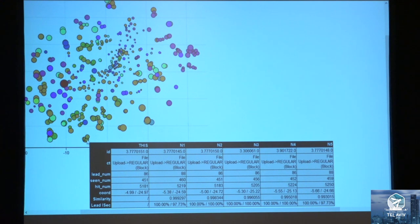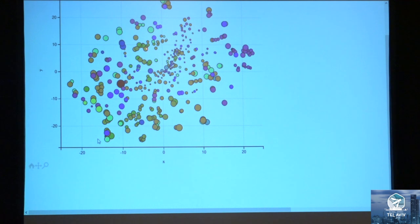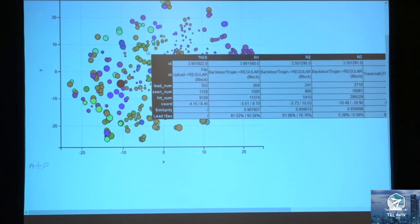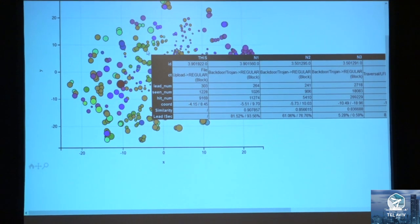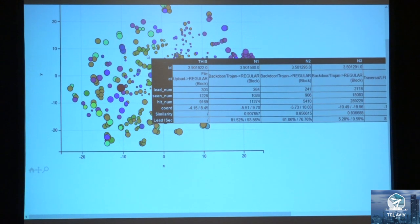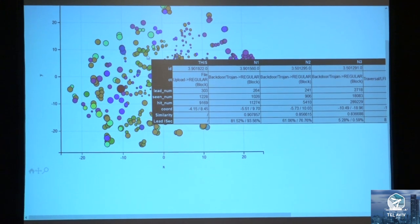Another example is this one, which is slightly different because we see rules of different types — different attack categories — coming together. At first it was surprising, but then we looked at these rules and saw that one is a file upload rule, meaning the attacker tried to upload a malicious file to the web server. Next, we see backdoor communication, meaning someone is trying to communicate with a backdoor. But then we figured out it makes a lot of sense: the attacker first tries to do the file upload, and if it succeeds, it then does backdoor communication.